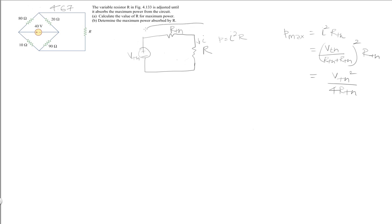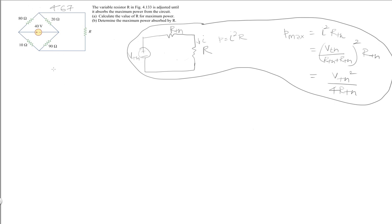So in order to do the circuit reduction — this is just the essence of what we're going to do from the concept — to solve this, first we have to find R Thevenin. To find R Thevenin, since there are no dependent sources, I would simply redraw this circuit without the voltage source. I disable it and find out what R Thevenin across terminals A and B is.